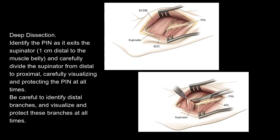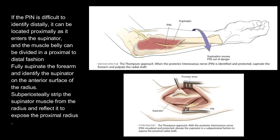Deep dissection: Identify the PIN as it exits the supinator, once immediately distal to the muscle belly, and carefully divide the supinator from distal to proximal, carefully visualizing and protecting the PIN at all times. Be careful to identify distal branches and protect these at all times. If the PIN is difficult to identify distally, it can be located proximally as it enters the supinator, and the muscle belly can be divided in a proximal to distal fashion.